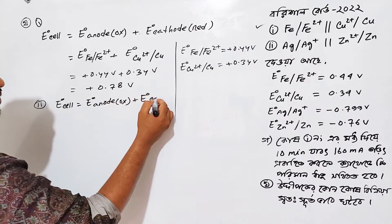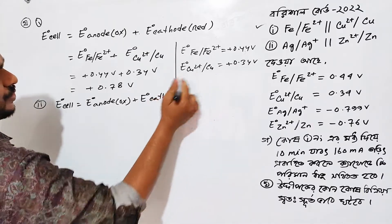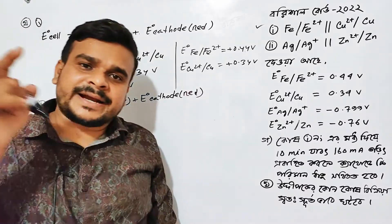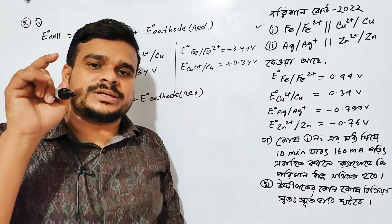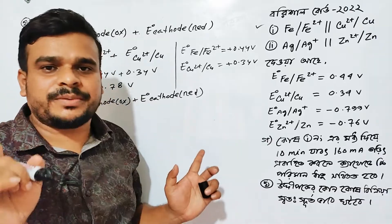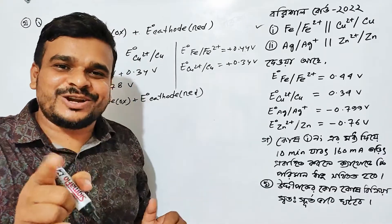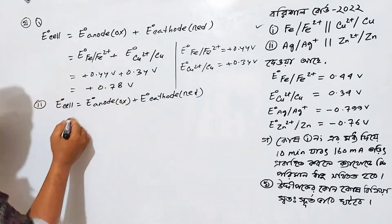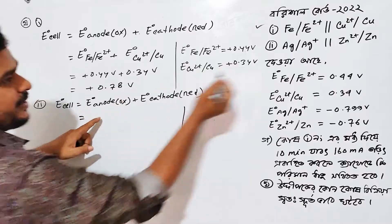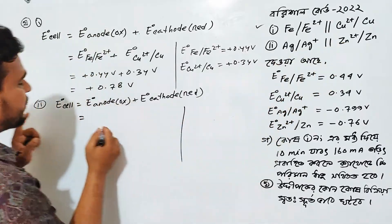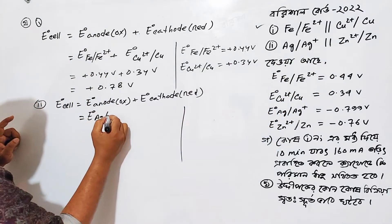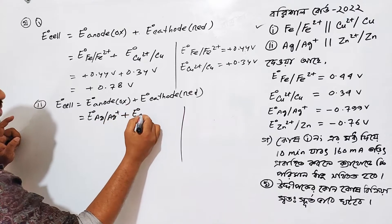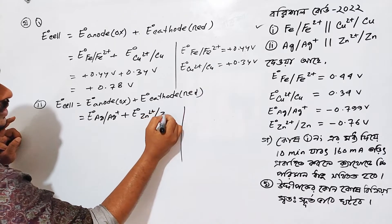Ox, anode, inert, cathode, red. If you want to make a whole thing, please take care of your family. Silver oblique, silver plus, plus A plus A plus, E naught, zinc, 2 plus oblique, zinc.